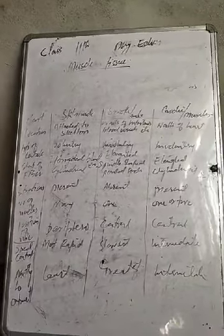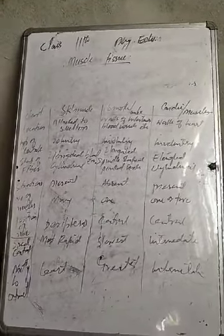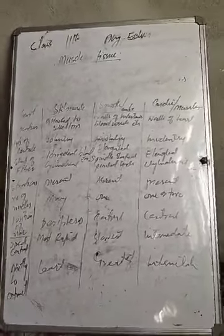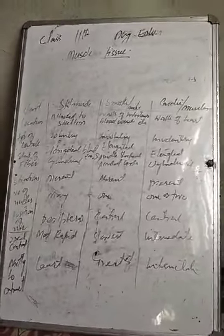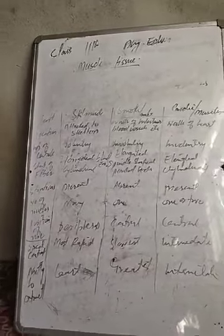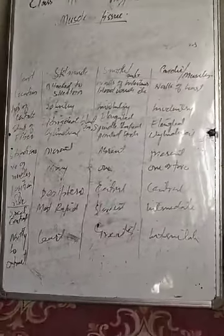The muscles have different shape, structure, and size. All muscles can be characterized as smooth muscles, cardiac muscles, or skeletal muscles. Now we have a little bit of comparison between muscle tissues.